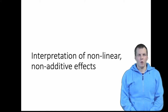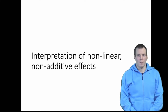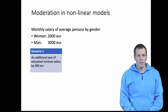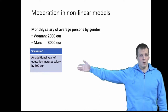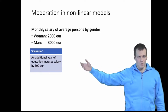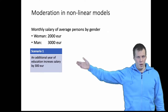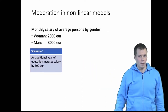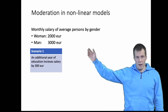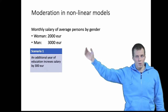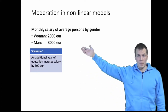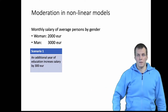Interpretation of nonlinear models is a bit more complicated than interpretation of linear regression models, and there is a lot of confusion around this in the literature. Let's start with an example. We have an effect that is constant: each additional increase of education by one year increases your monthly salary by 300 euros. The average salary for women is 2,000 euros and the average salary for men is 3,000 euros, so the effect is the same for both and that's fairly easy to interpret.